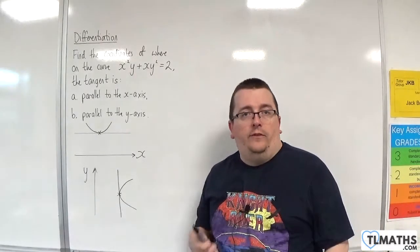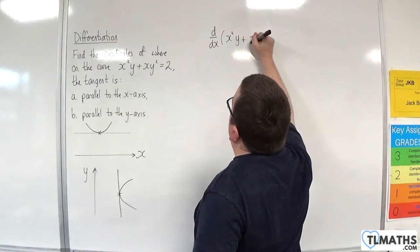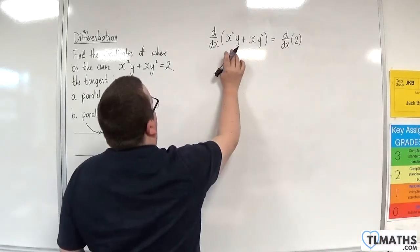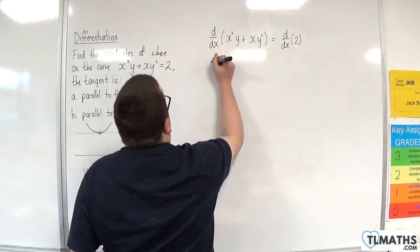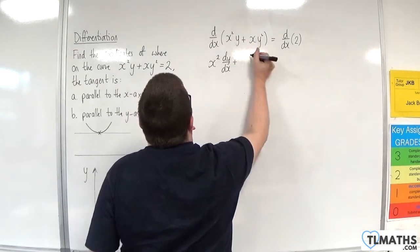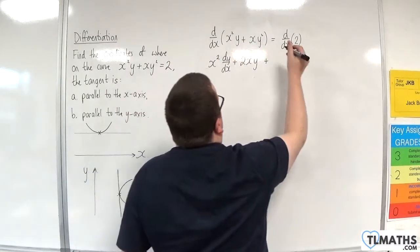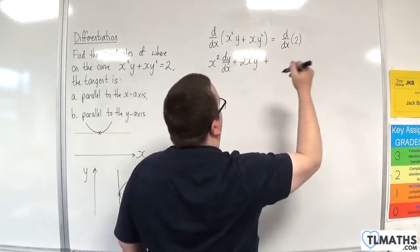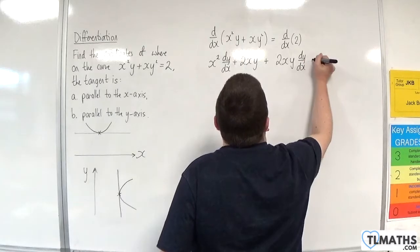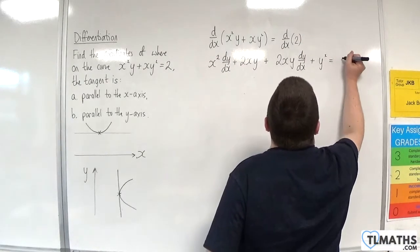So the first thing to do is to differentiate it. d/dx of the left-hand side, x squared y plus xy squared, is equal to d/dx of 2. We're going to need to use the product rule twice here. The product rule: the first times the derivative of the second, plus the second times the derivative of the first. So 2xy - that is from the first bit. Now we need to differentiate xy squared: the first times the derivative of the second, which would be 2y dy/dx, so we'll have 2xy dy/dx, plus the second times the derivative of the first, so just y squared, is equal to the derivative of 2, which is 0.